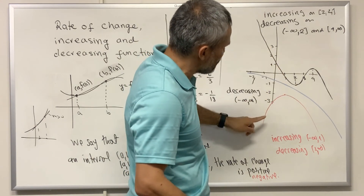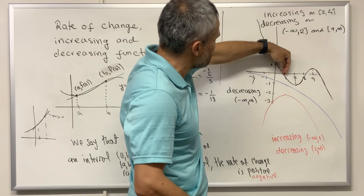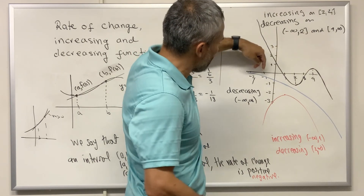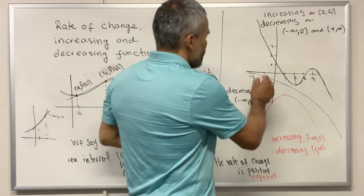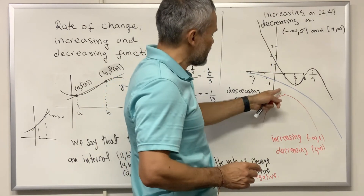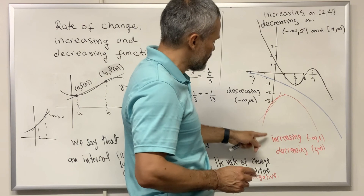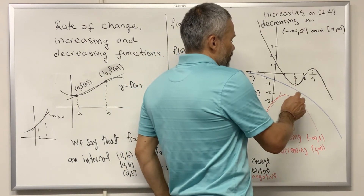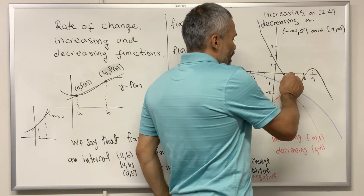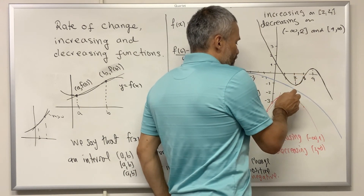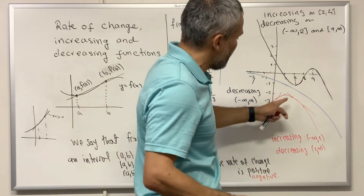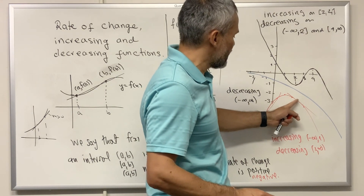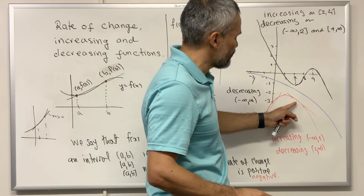For values in the domain that are smaller than one, if you pick two points you're going to get a positive average rate of change, which means the function is increasing. Similarly, if you pick a pair of numbers that are after one and compute the average rate of change, you will be getting a negative average rate of change, which means the function is decreasing.